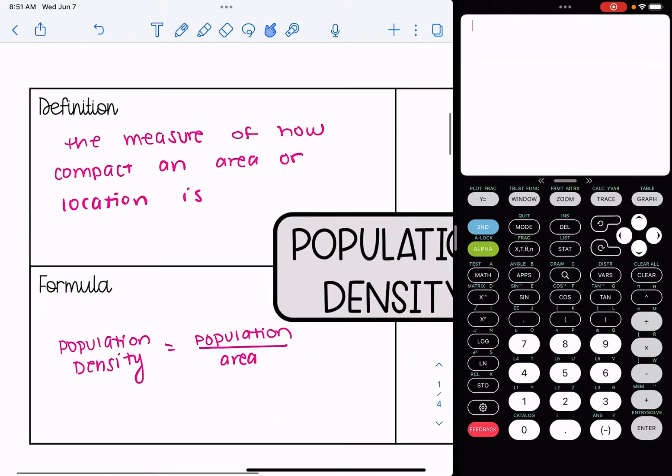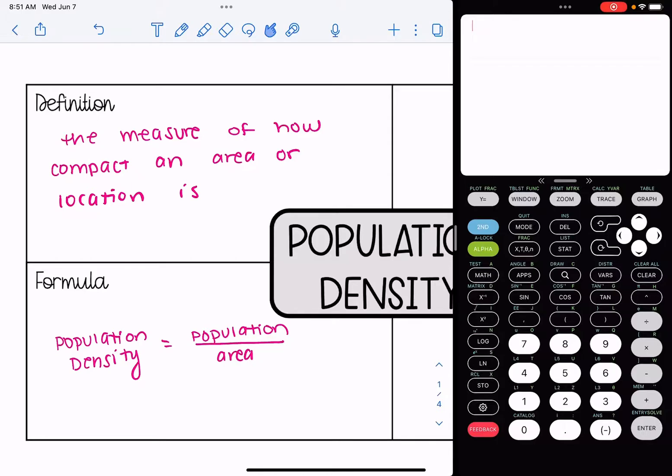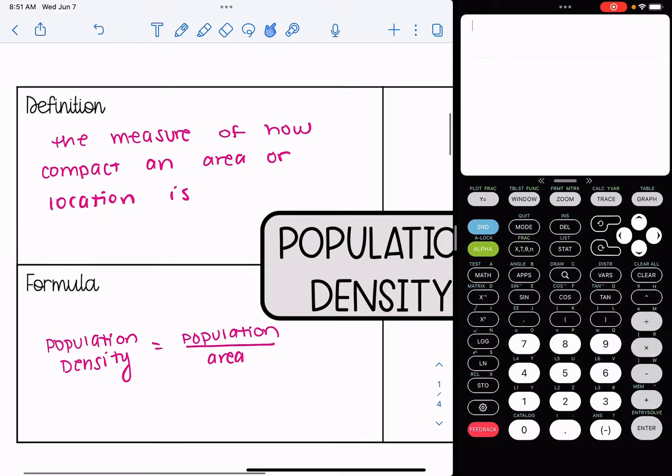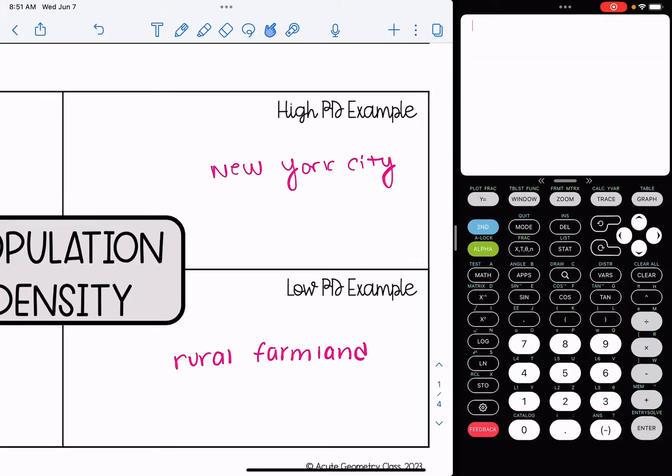Now let's talk about population density. It measures how compact an area or location is. The formula is population density equals population divided by area. Let's talk about an example that has high population density versus low. New York City has a very high population density because there are a lot of people in New York City, but there is not a lot of space. The city's square mileage is not large, but we fit all these people by building skyscrapers and going upward. That's high population density. Whereas if we think about rural farmland, one family might have acres of land to themselves. There's not a lot of people, but they have a lot of space. That's an example of low population density.